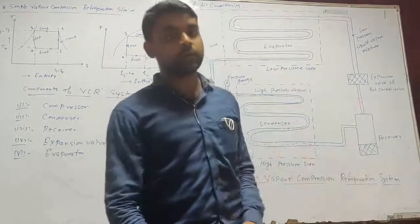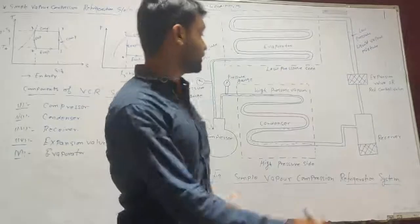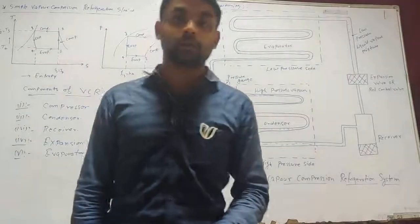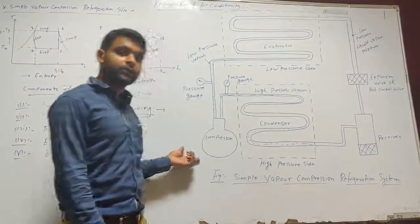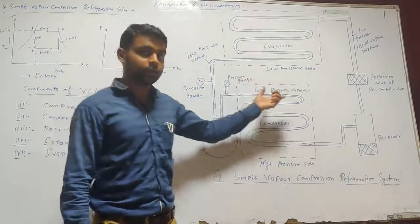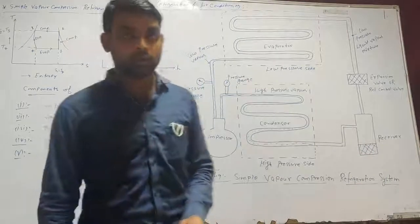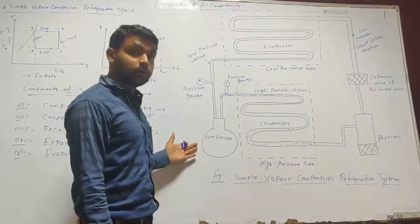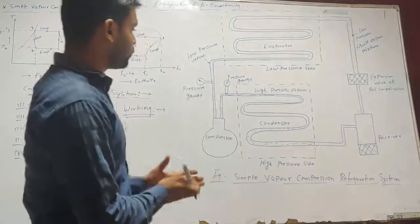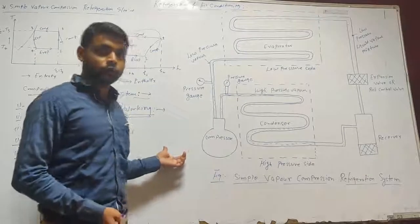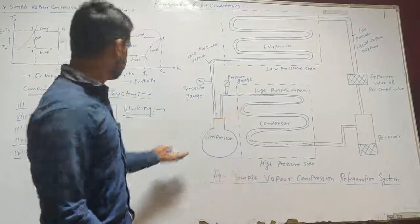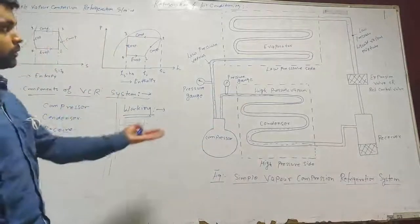Let's talk about the advantages of the vapor compression refrigeration system as compared to the air refrigeration system. The COP is very high compared to the air refrigeration system. If we talk about the disadvantages, the initial cost is high. Also, refrigerant leakage is a major problem. These are the components and working of the vapor compression refrigeration system.